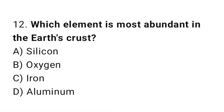Question number twelve: which element is most abundant in earth's crust? The correct answer is B: oxygen.